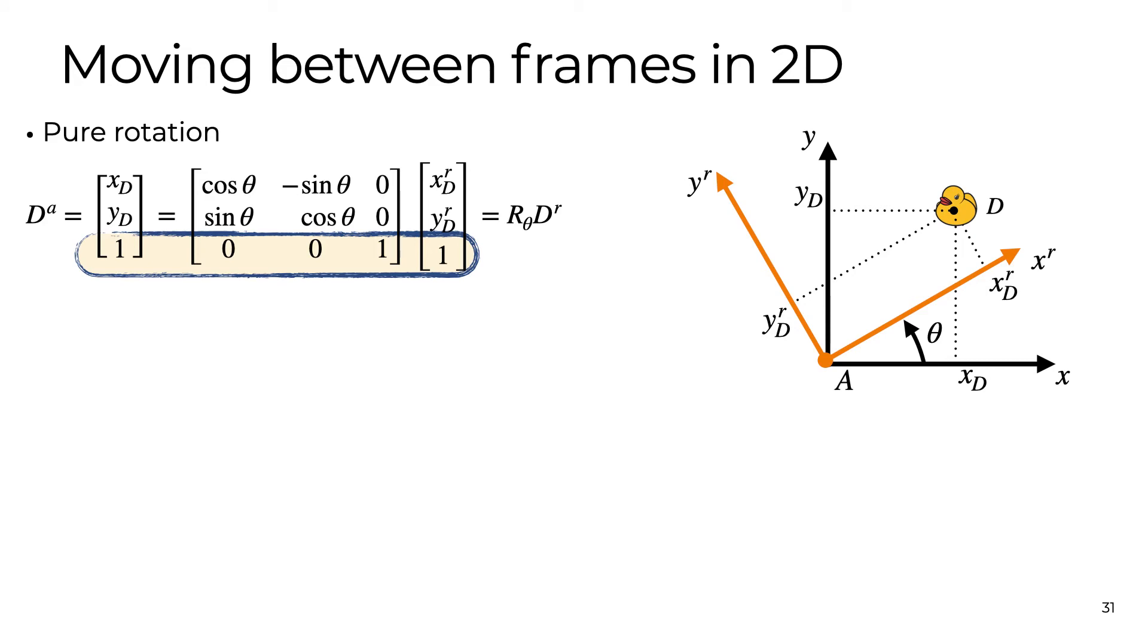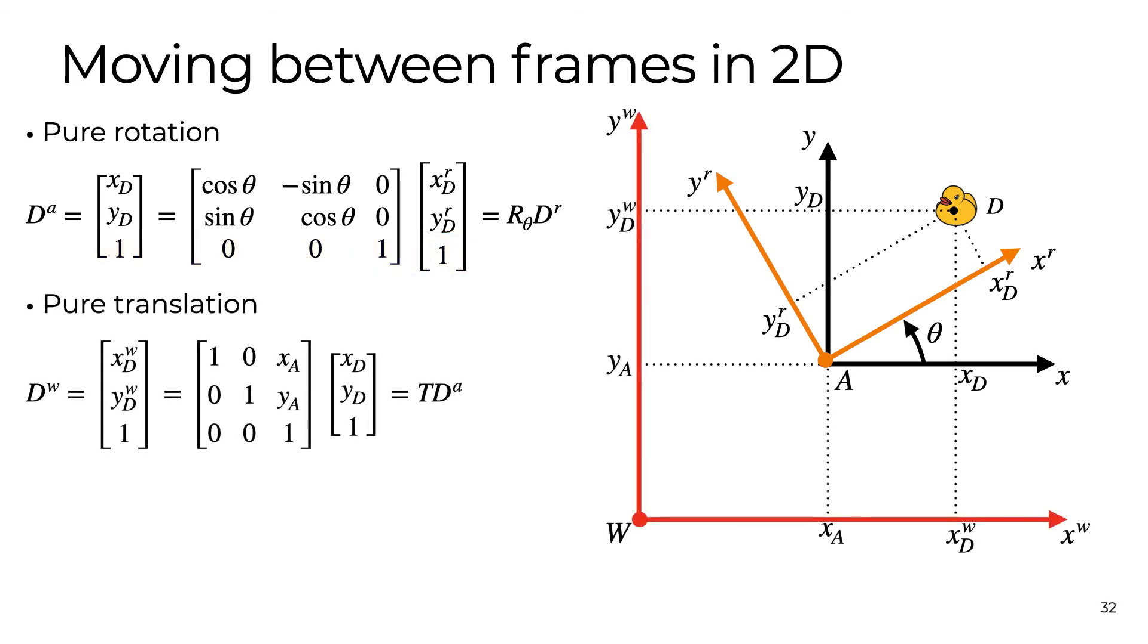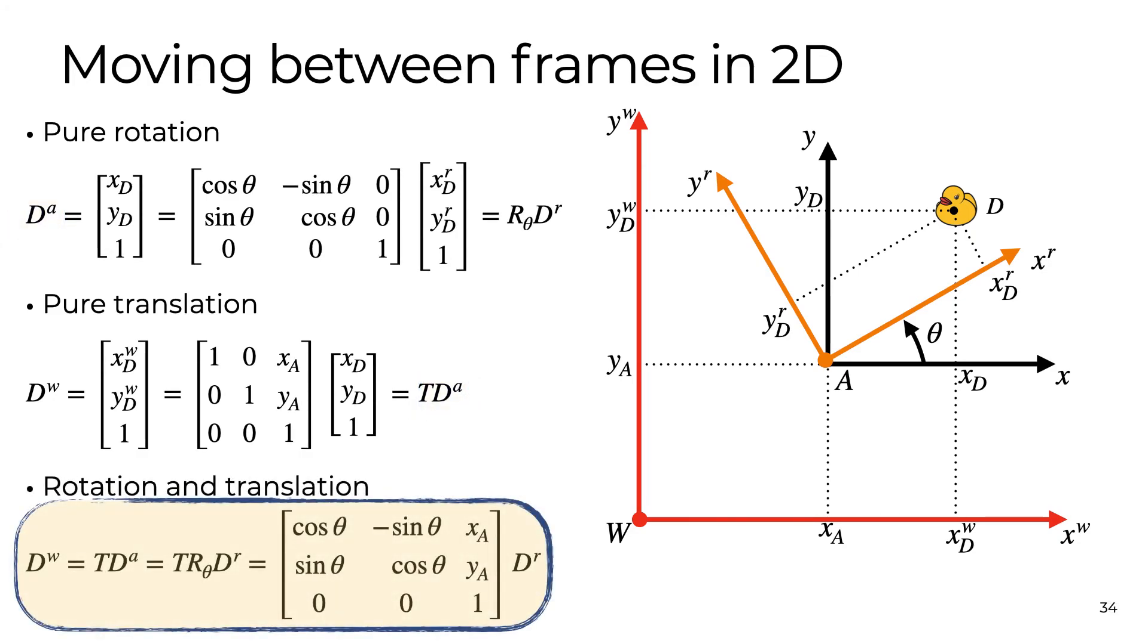The first step is to use the same mathematical trick of translations and add a dimension to the rotation expression. The second step is recalling the translations relations. Note that this relation requires as input the coordinates of point D in the purely translated reference frame, which is exactly what the pure rotation relation yields. By substituting the pure rotation expression in the translations one, we get a mapping between any point of the plane in the robot frame and the world frame.